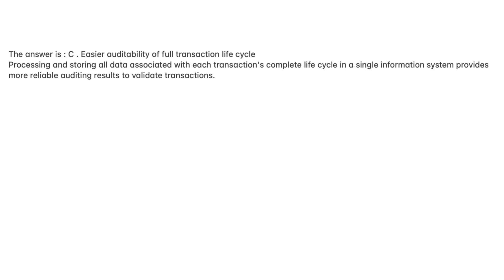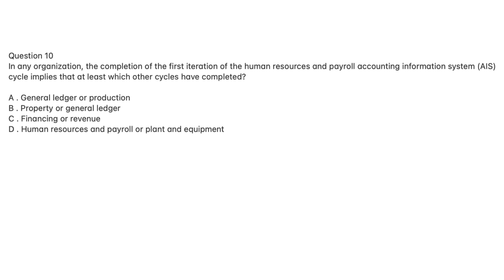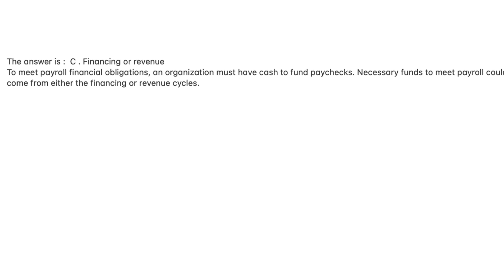Question 10. In any organization, the completion of the first iteration of the Human Resources and Payroll Accounting Information System, AIS, cycle implies that at least which other cycles have completed? A. General ledger or production. B. Property or general ledger. C. Financing or revenue. D. Human resources and payroll or plant and equipment. The answer is C, financing or revenue. To meet payroll financial obligations, an organization must have cash to fund paychecks. Necessary funds to meet payroll could come from either the financing or revenue cycles.